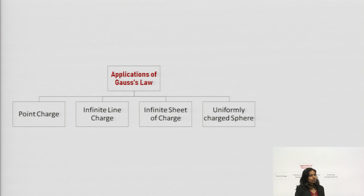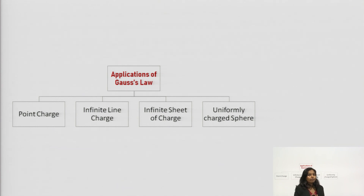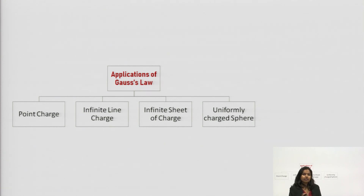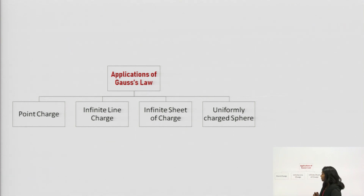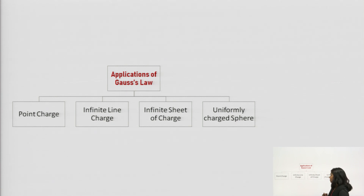Gauss law holds for all cases, whether the charge distribution will be symmetrical or not. But application of Gauss law in order to find electric field or electric flux density will be possible only when the charge will be symmetric. These are the four kinds of charge distribution where we can apply Gauss law in order to find electric field intensity. The first one is infinite line charge.